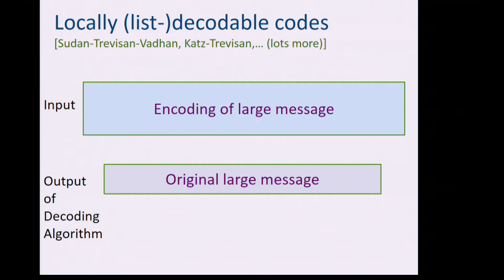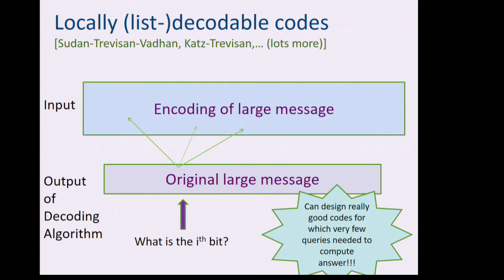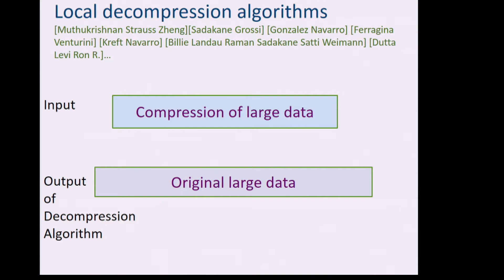Let me give some examples that fit within this paradigm and have been around for a long time. In coding theory, there are locally decodable codes where the input is an encoding of a large message and the output of the decoding algorithm is the original large message. But maybe you don't need the whole original message — maybe you just want to know the i-th bit, or a few bits. Do you need to decode the whole message just to get the pieces you need? It turns out you don't. You can design really good codes for which very few queries are needed to compute the answer.